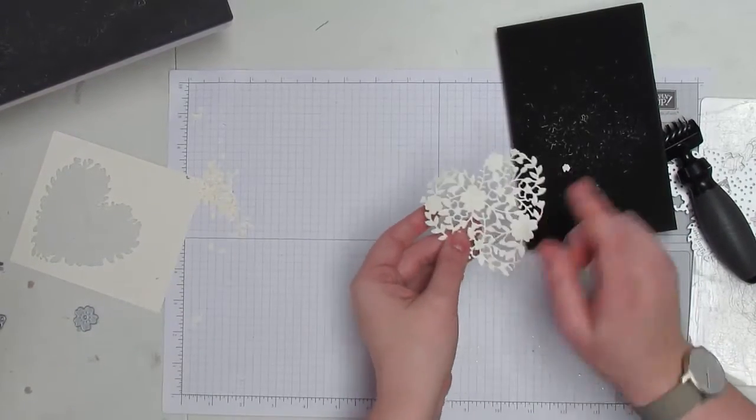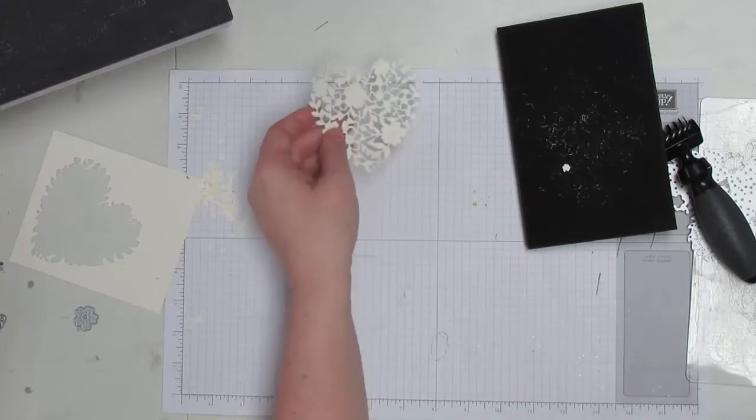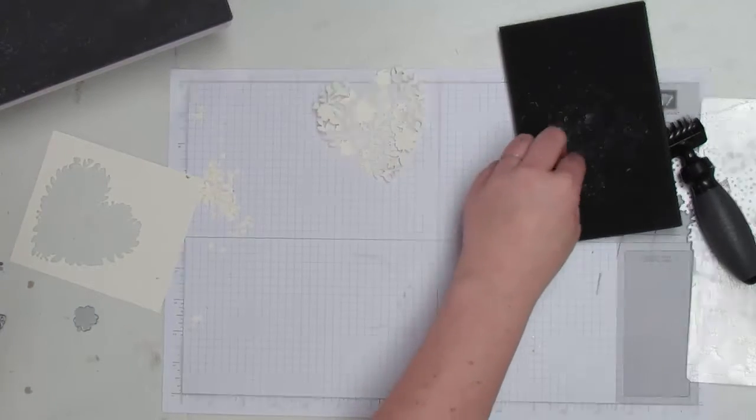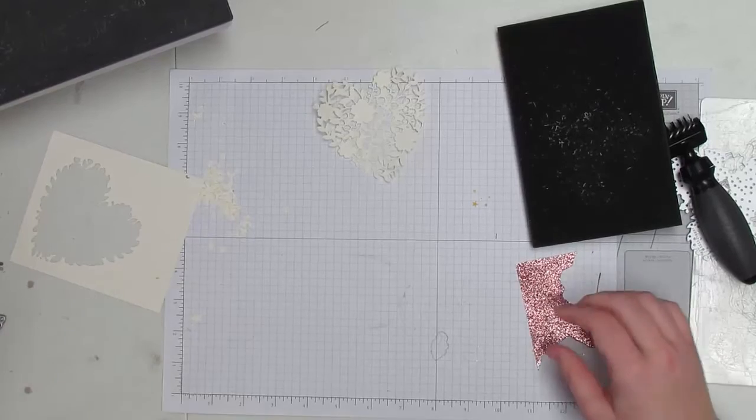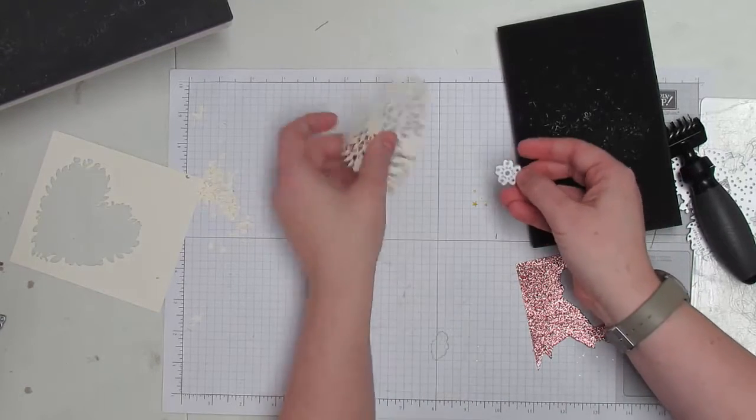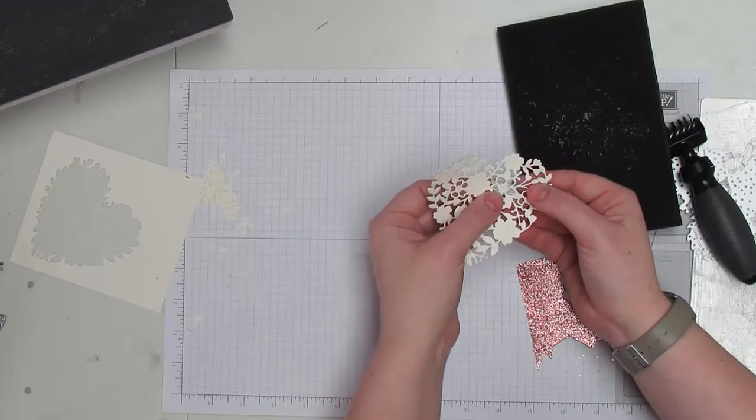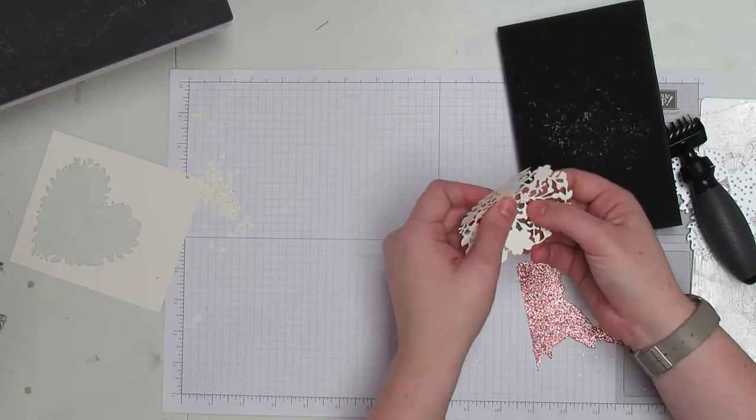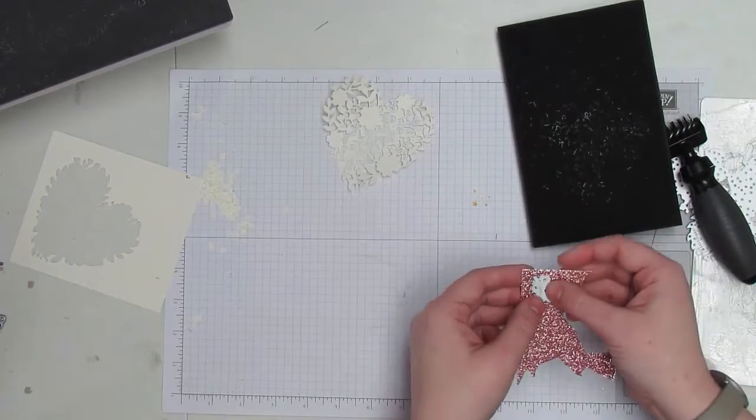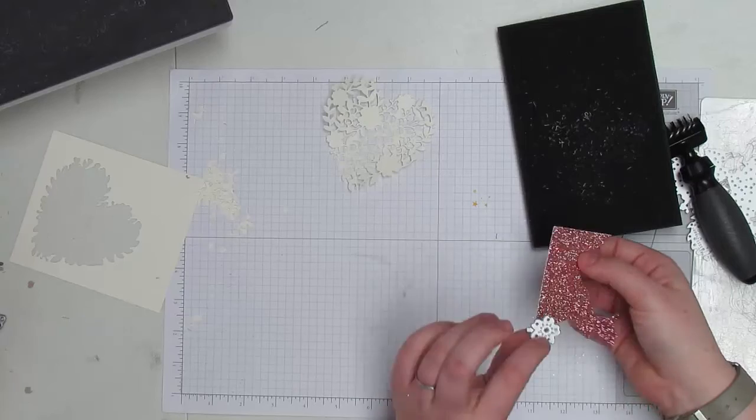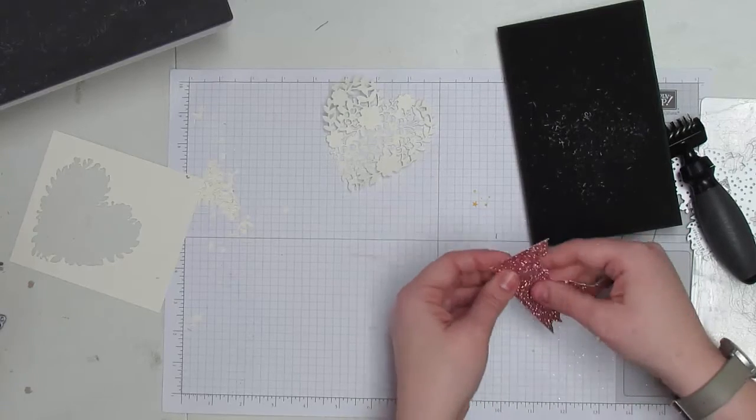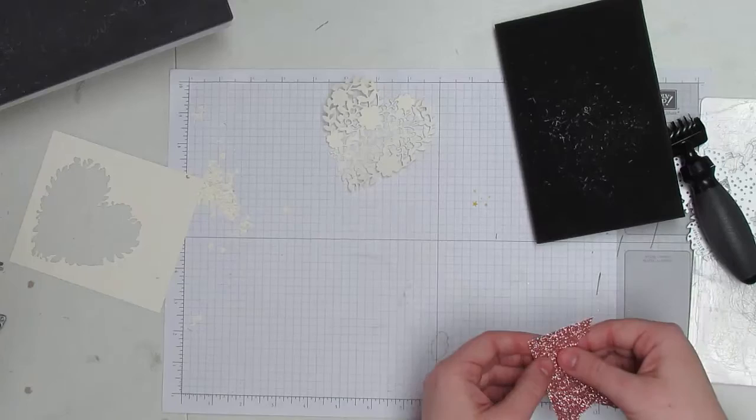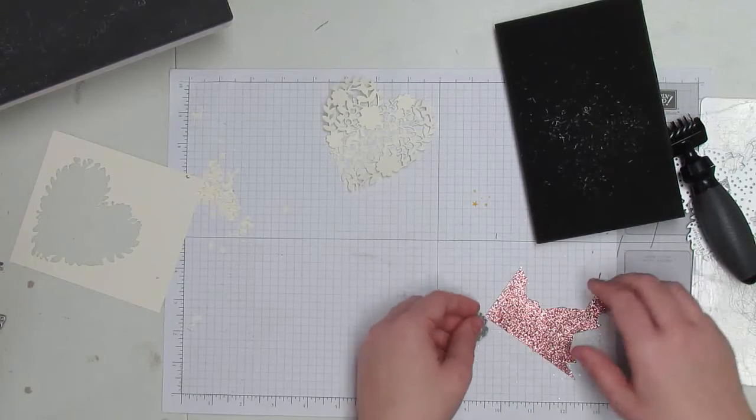From here we'll be using the butterfly die to cut this out. But before I move on to that, I will also show that the die has these little flowers and they line up really nicely behind the flowers on here. So I'm going to go ahead and cut out a couple with the Blushing Bride glimmer paper because it's just so pretty.